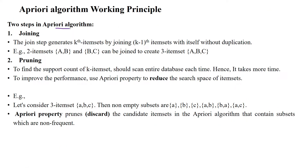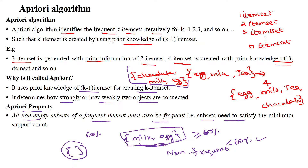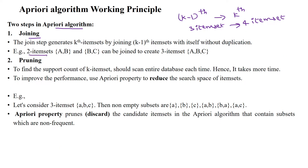The A Priori algorithm has two important steps. The first is the joining step, where k-minus-1 itemsets are used to generate the kth itemset — for example, three-itemsets are used to generate four-itemsets. For instance, chocolate, milk, egg is one three-itemset, and egg, milk, tea is another. These two three-itemsets are joined to create a four-itemset. Similarly, two-itemsets A,B and B,C are joined together to create the three-itemset A,B,C.